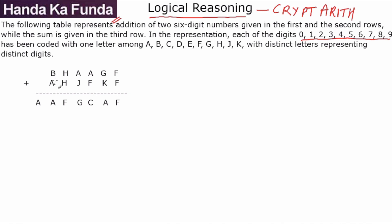B and A can be a maximum of what? The maximum possible value for B and A is 8 and 9, or 17. So a carryover of 1 is the maximum that can be generated, and that carryover will be my leftmost digit, which means the value of A is nothing else but 1. So I will make all the A's 1 so that my calculations become easier going forward.